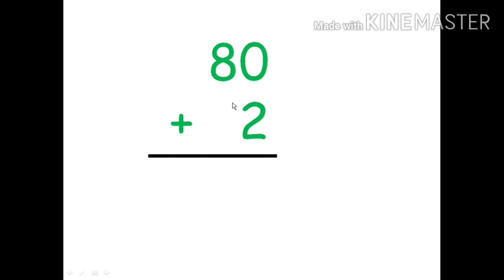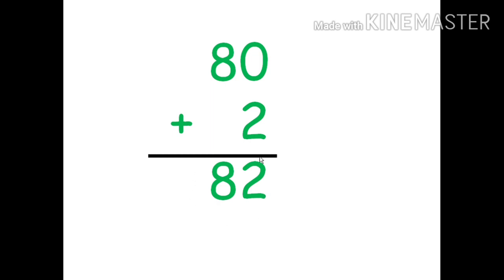Here we have 80 plus 2. How much is 80 plus 2? Very good — 82. In 82, the place value of 8 is 80 and the place value of 2 is 2. We added both of them, so 80 plus 2 is the expanded form of 82.